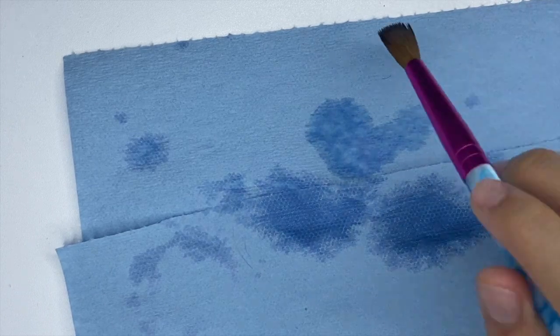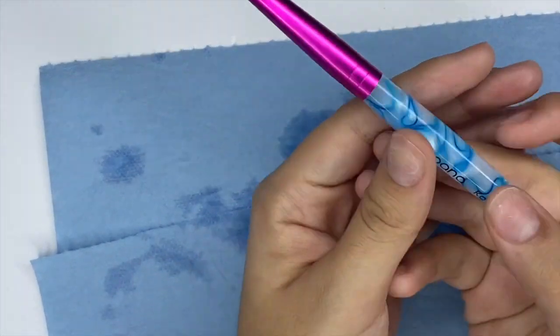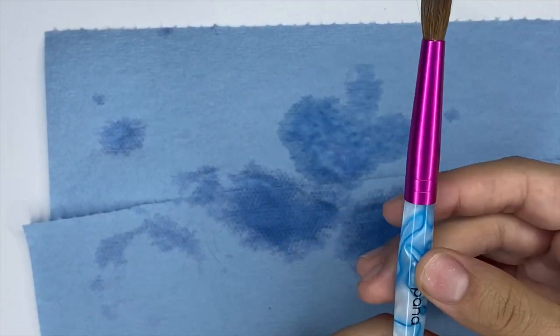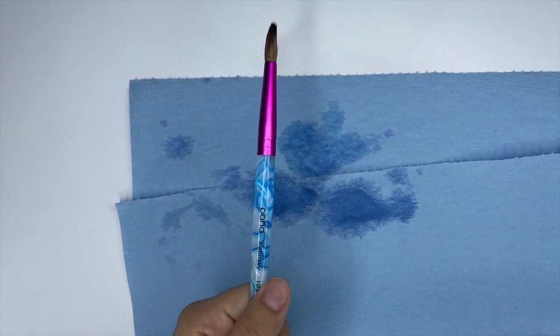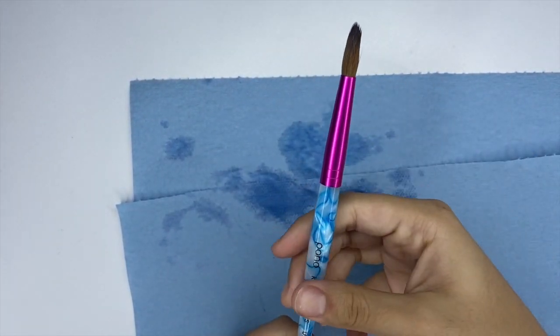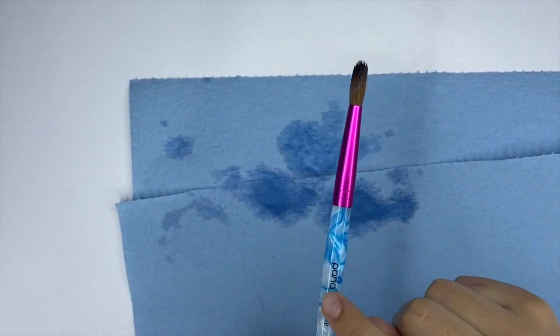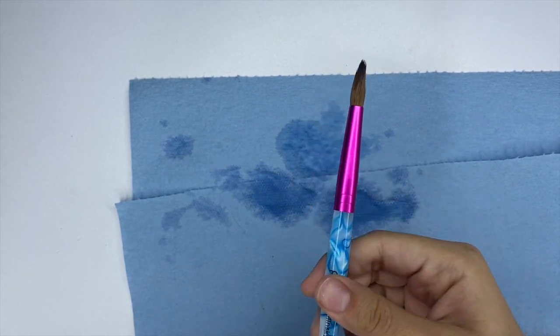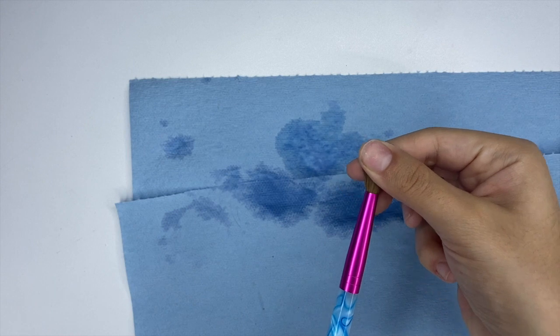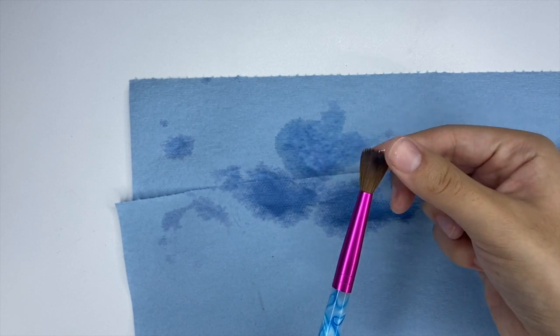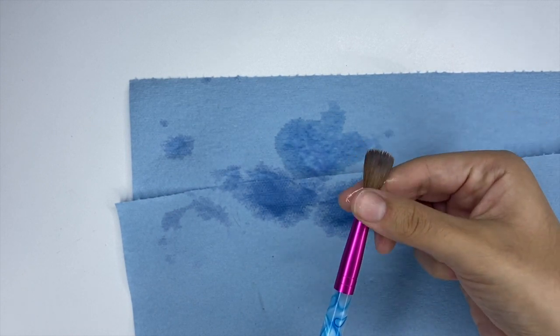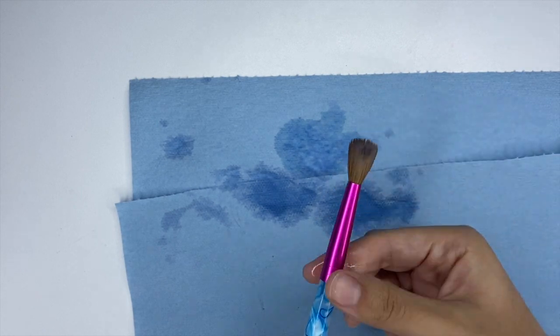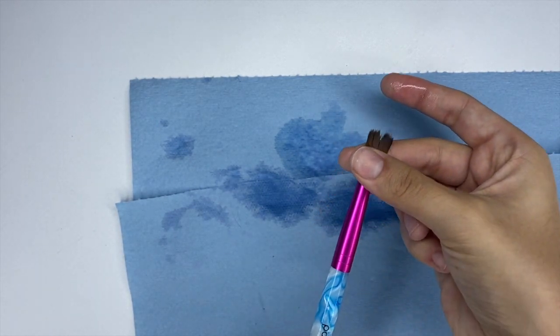But something that I learned is that that side where it says Pana Kolinsky, that's the side that you are going to flat out your brush. So we're gently going to flatten out our brush that way. Make sure to flatten out where it says Pana Kolinsky or whatever the brush says.